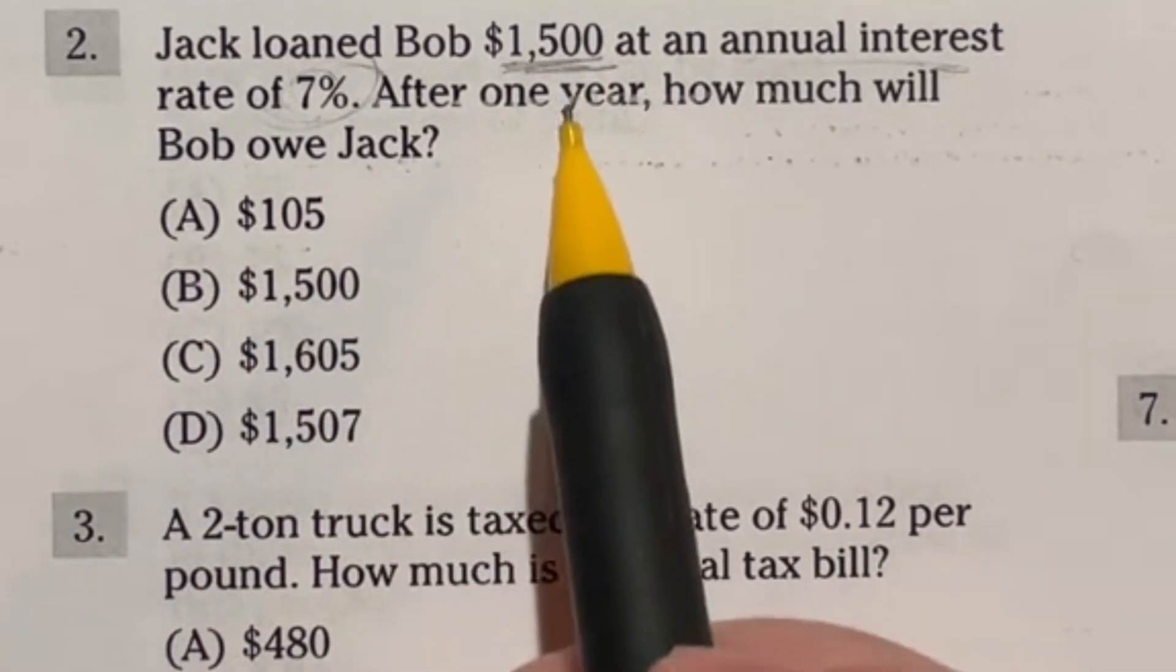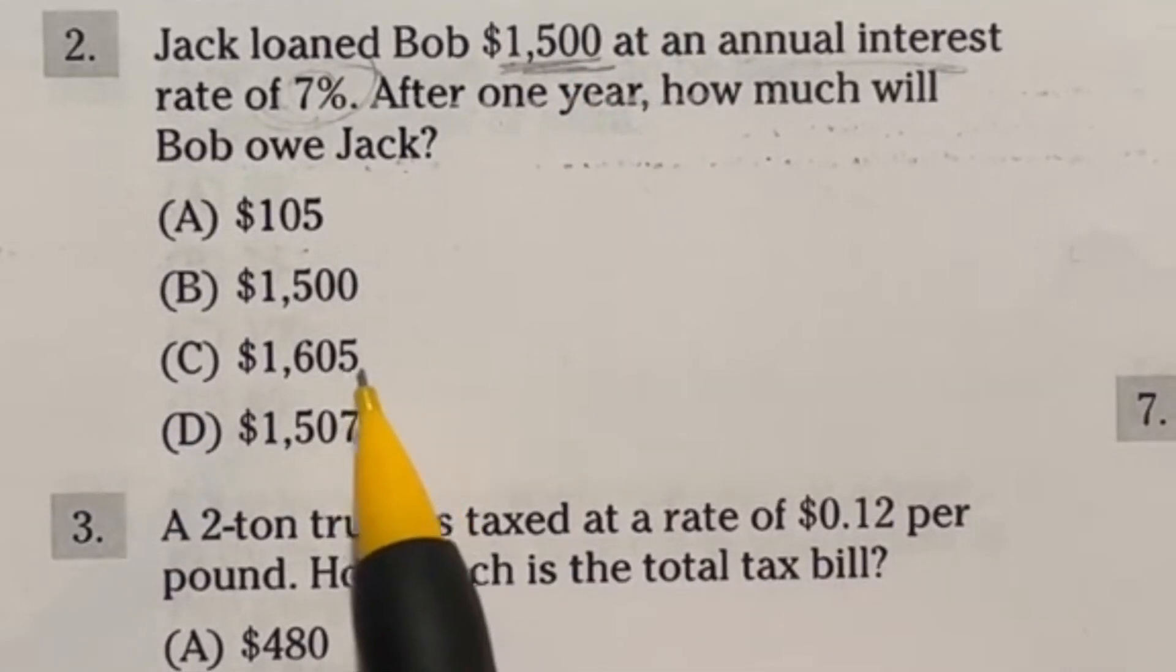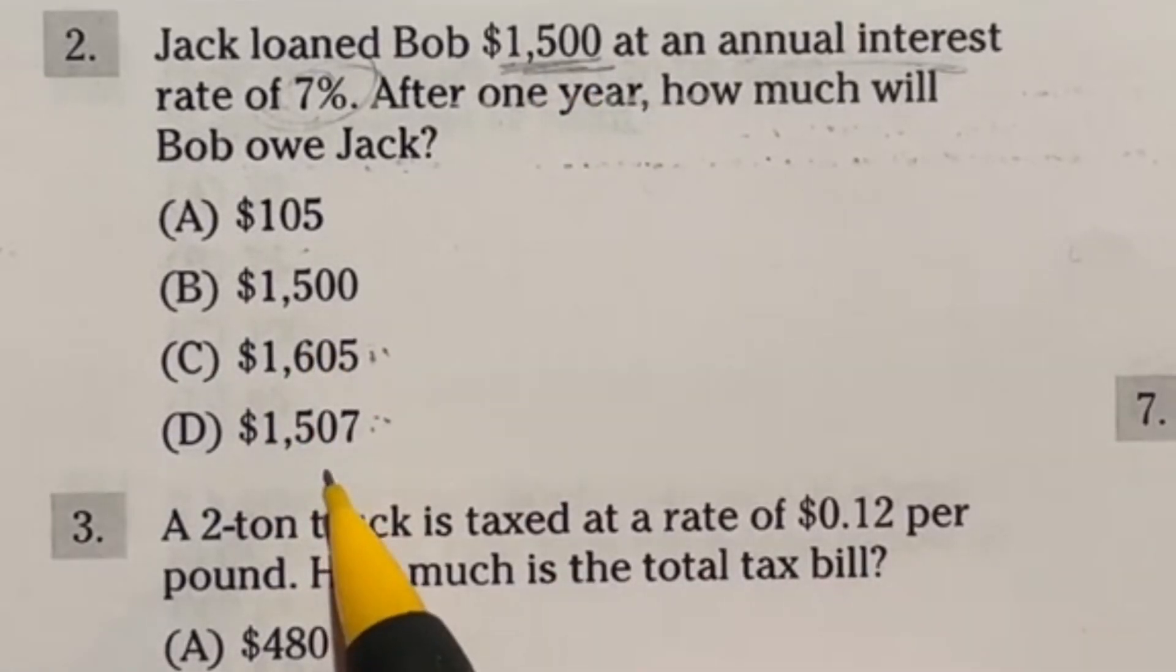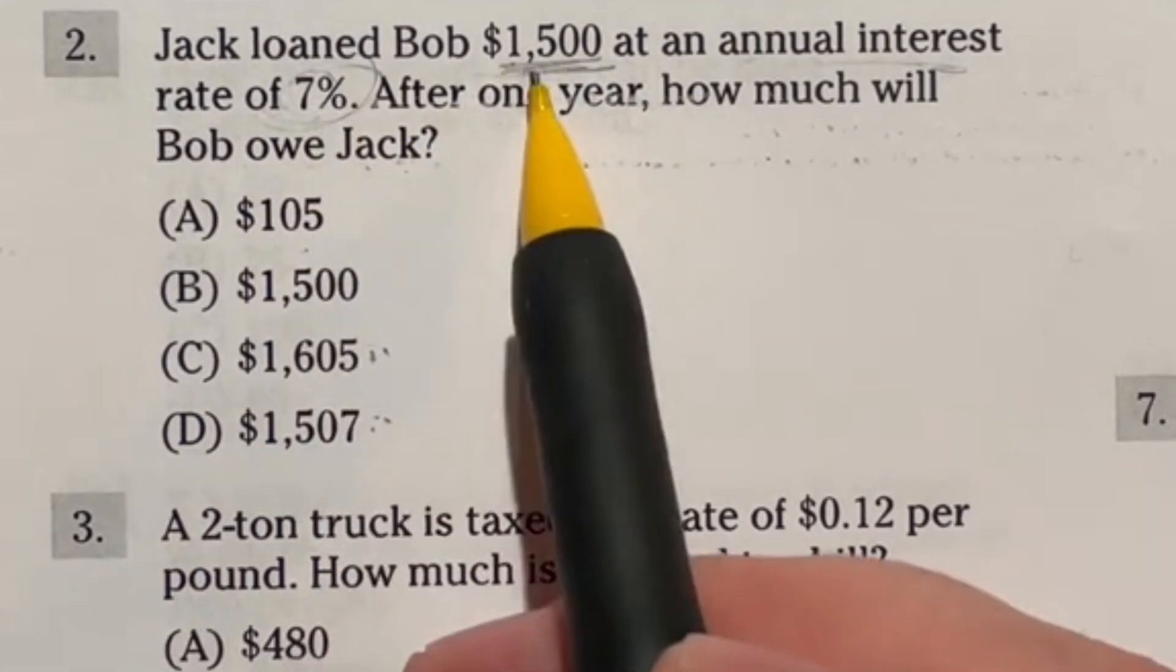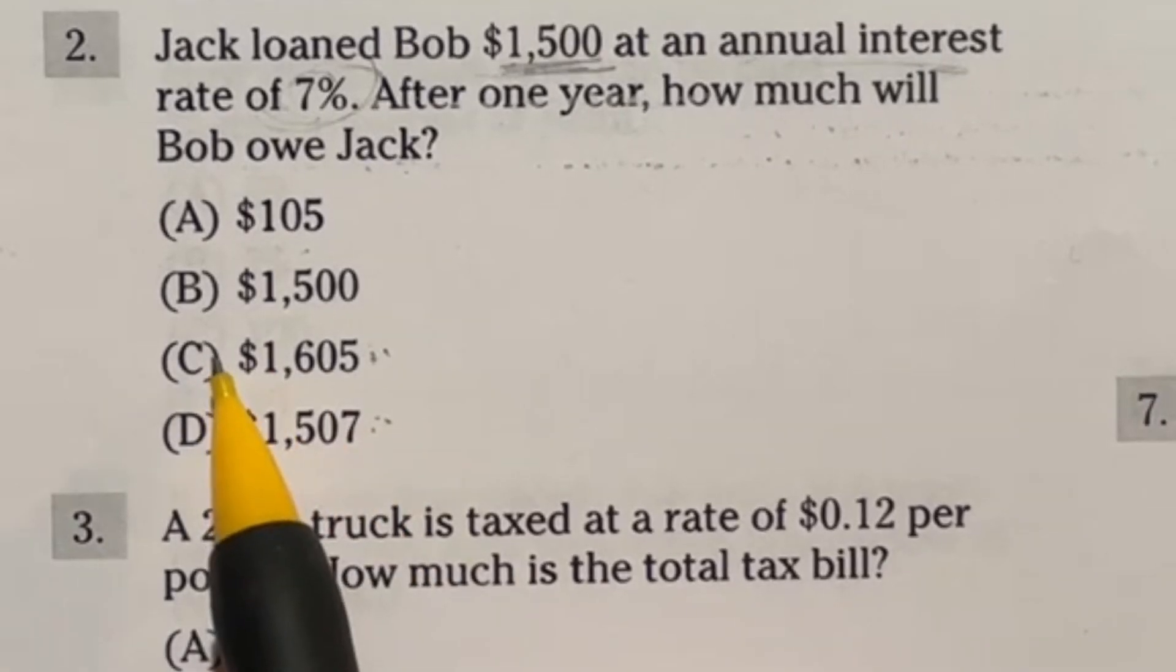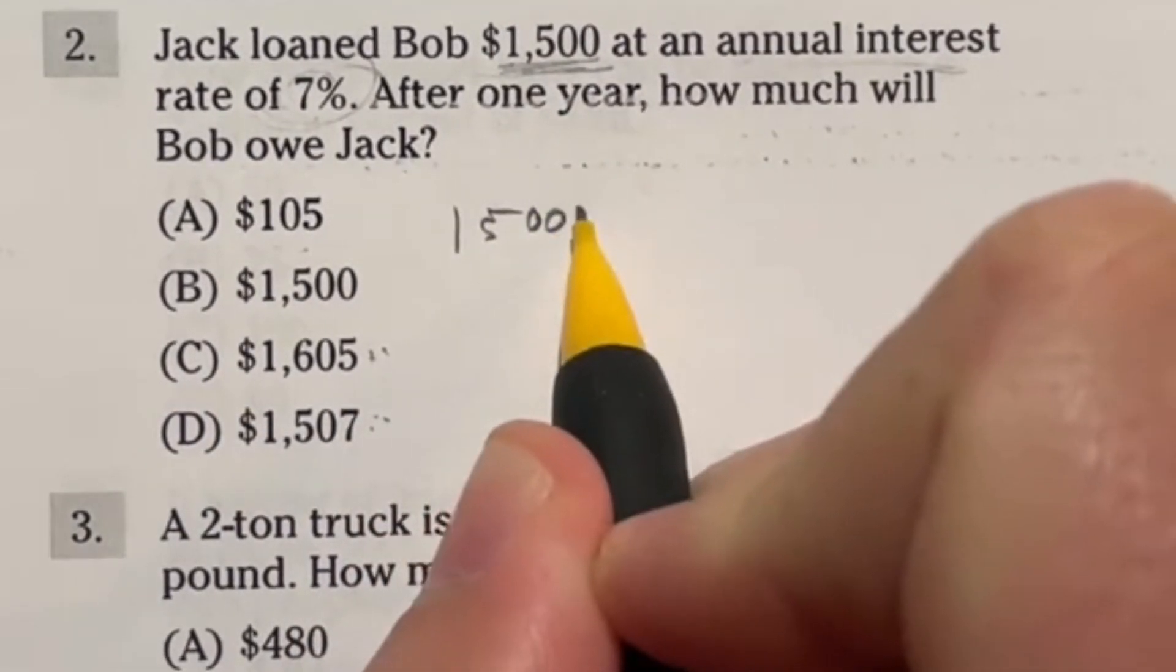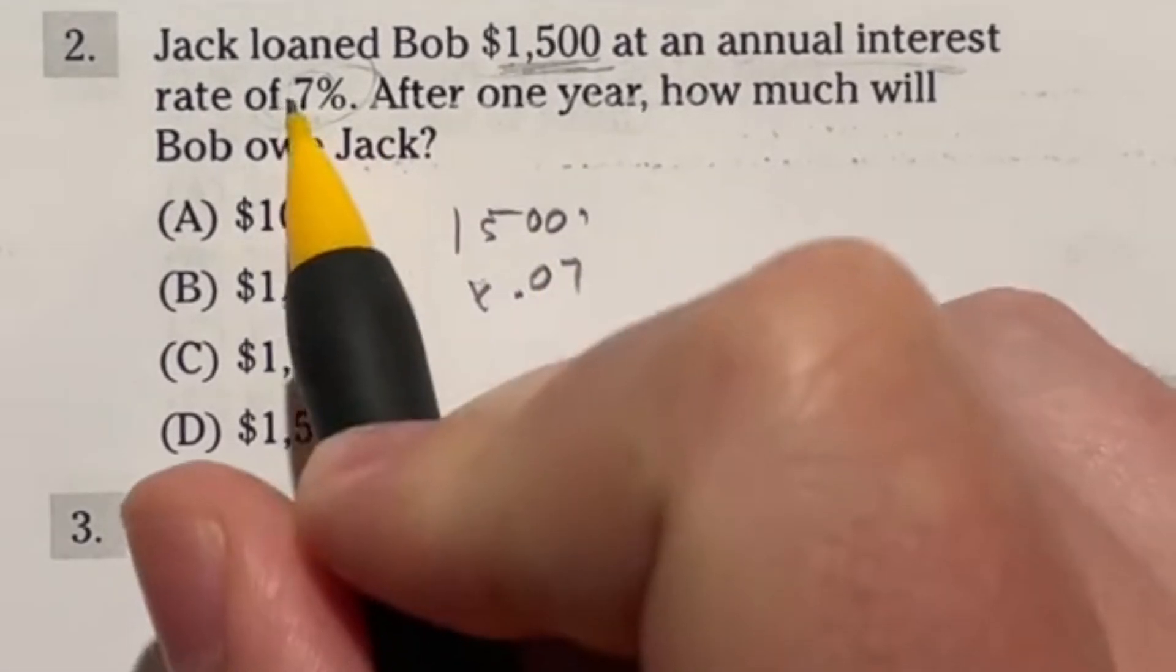So right off the bat the only one that seems like a reasonable option would be either C or D because of the fact that it's higher than fifteen hundred. Like he's going to be given more than fifteen hundred. I can also tell you right now that like seven percent is going to be far more than seven dollars. So I'm almost a hundred percent sure that the answer is C. But let's go ahead and do it out just so that you guys know what this looks like.